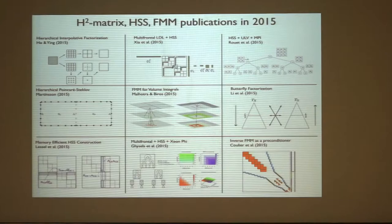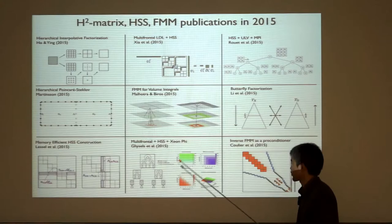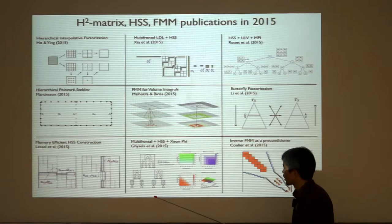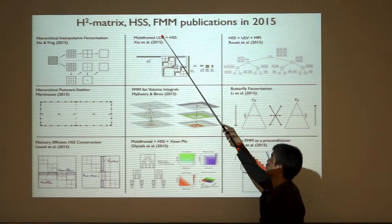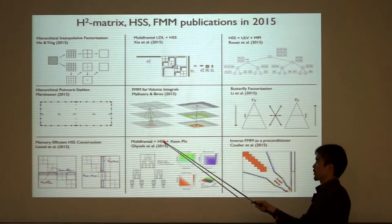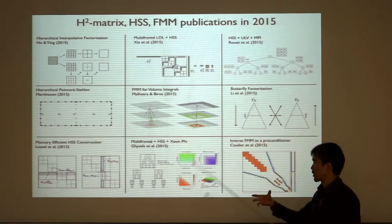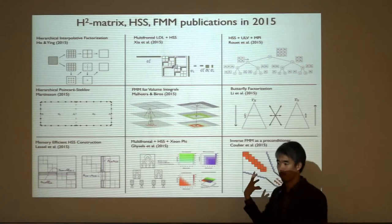A question was raised about HSS combined with multifrontal methods. The idea is: perform standard LU or LDL factorization using a multifrontal method, and then compress the dense Schur complement that forms using HSS. One paper simply implements this on Xeon Phi. The key insight is that the highest level has the deepest tree, while smaller Schur complements have shallow trees. At some point it no longer makes sense to do it hierarchically, so you switch to dense linear algebra directly.